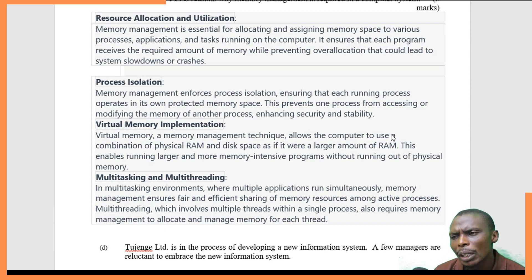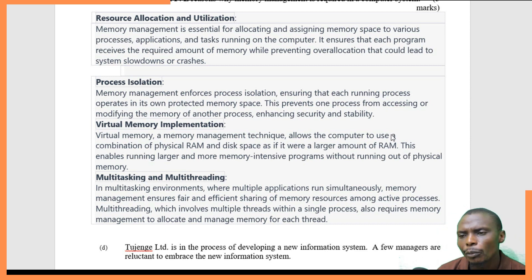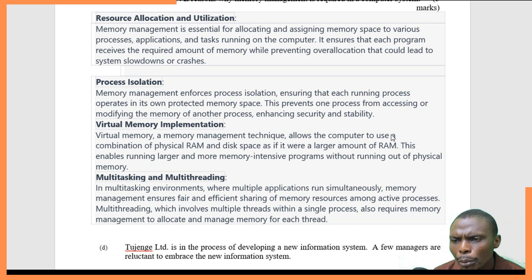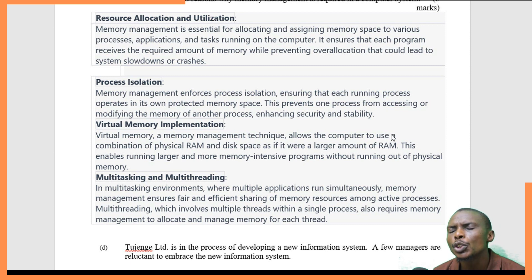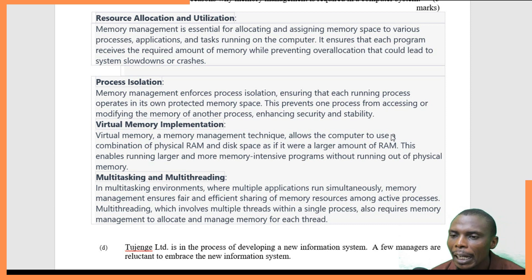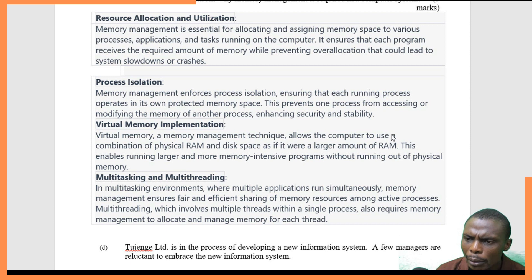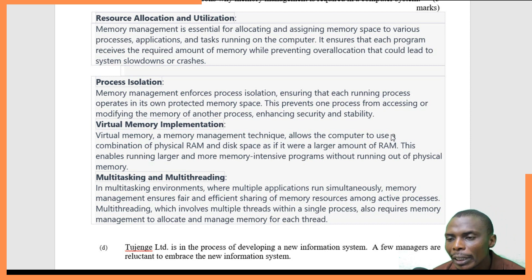This prevents one process from interfering with another process. The third reason is virtual memory. Virtual memory is a memory technique that allows the computer to use part of the hard disk as RAM — the CPU will use the hard disk as though it is part of the RAM.